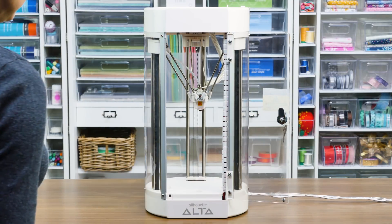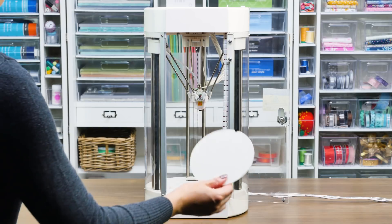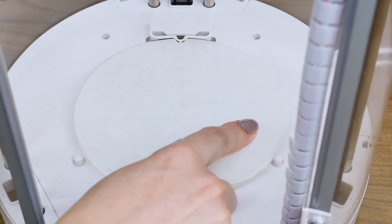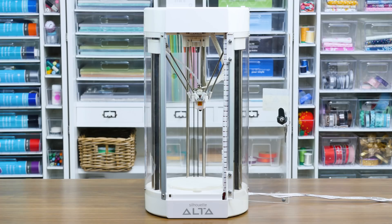After the tape is adhered, place the platform piece under the print nozzle with the tape side facing up. Make sure the notch of the platform lines up with the notch at the bottom of the machine.